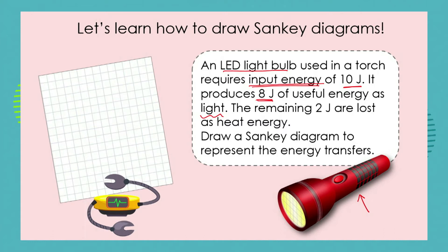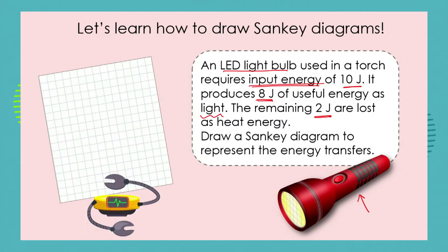The torch produces 8 joules of useful energy in the form of light, but no system is 100% efficient — the remaining 2 joules are lost as heat energy. So even though we've got what appears to be quite an energy efficient system, it's not 100% energy efficient. Draw a Sankey diagram to represent the energy transfers.